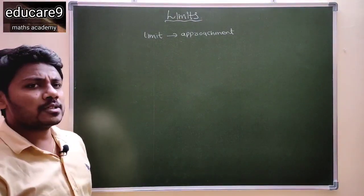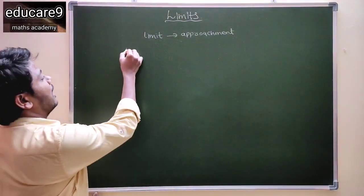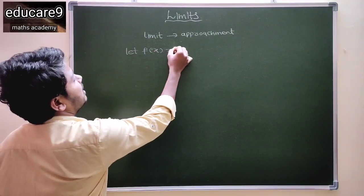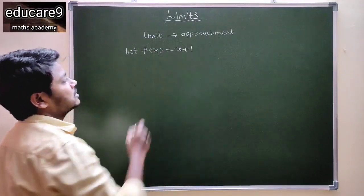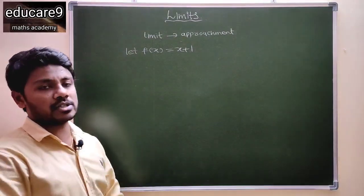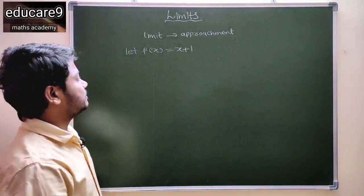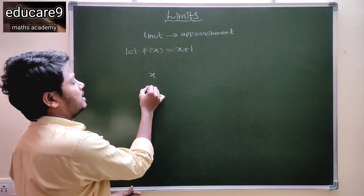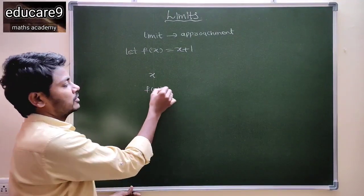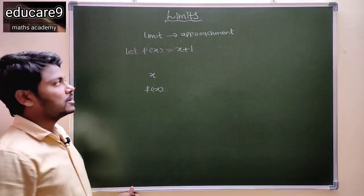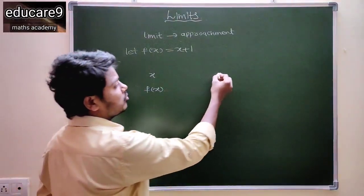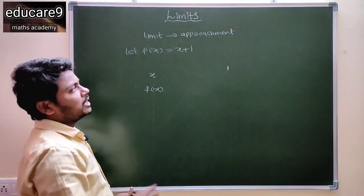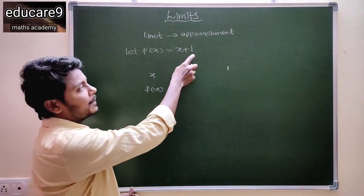So for example, let f of x is equal to x plus 1. This is any function. Here, this is the x value and this is the f of x value. If x is equal to 1, then what is the f of x value? 1 plus 1 equals 2.